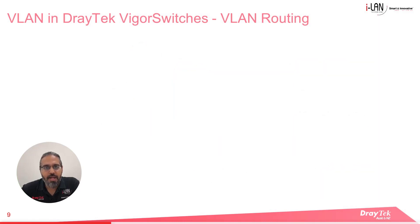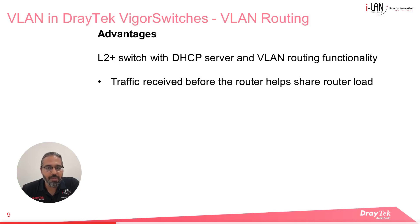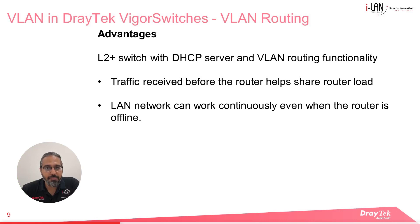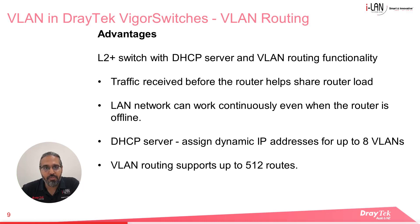There are a number of benefits of using Layer 2 Plus VigorSwitches, which provide both VLAN routing functionality as well as DHCP services. Traffic on the LAN is received by the VigorSwitch before it reaches the router, so it helps to share and reduce the router's load. If the router should go offline for some reason, the local network can still work uninterrupted since the VigorSwitch will continue to provide routing and DHCP services. The DHCP server can assign dynamic IP addresses for up to 8 VLANs, and VLAN routing will support up to 512 routes, which is usually more than enough for a medium-sized network.